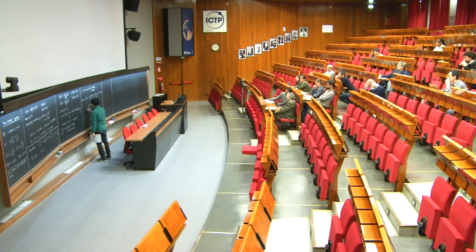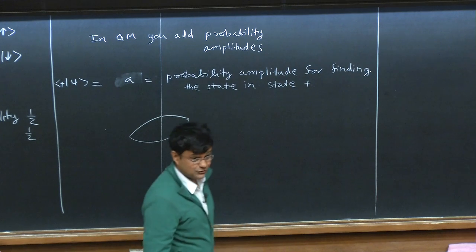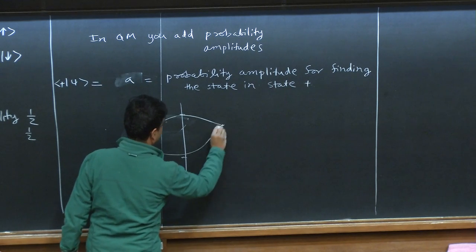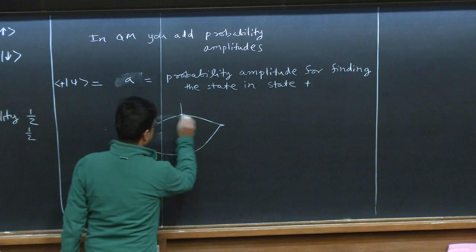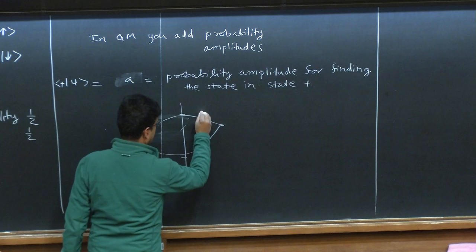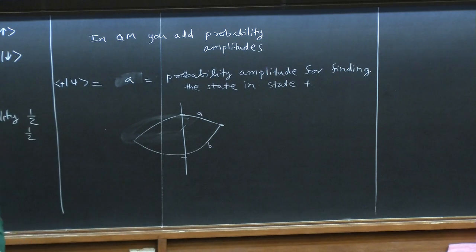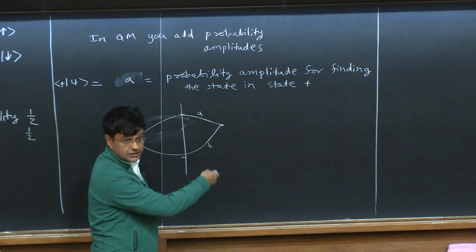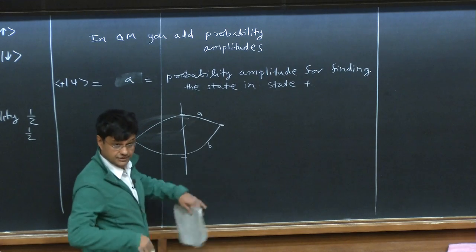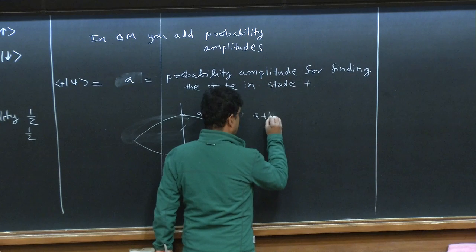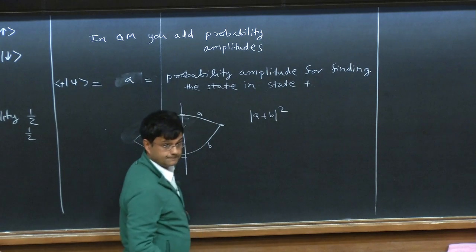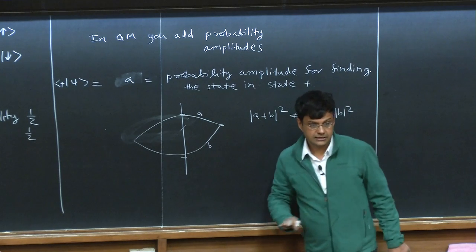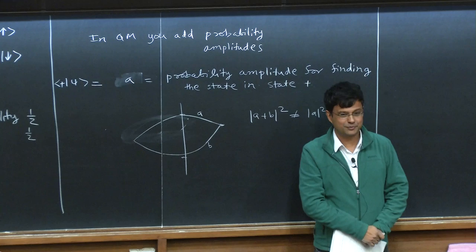If there are two alternatives to achieving the same result — for example if a particle can go this way and come here, or that way — then you associate a probability amplitude A with one process and B with the other. If this were a classical particle you would add the probabilities: A² + B². Whereas in quantum mechanics what you add is A + B, and then take the square. This is not the same as adding A² + B². Some of these questions are more appropriate for a tutorial.